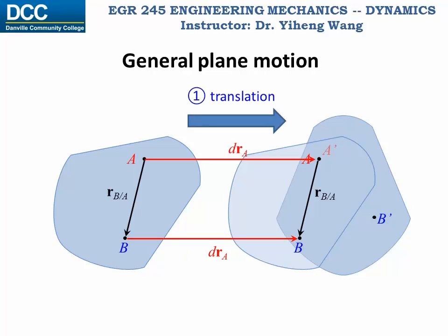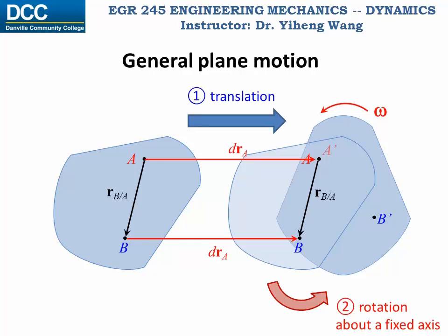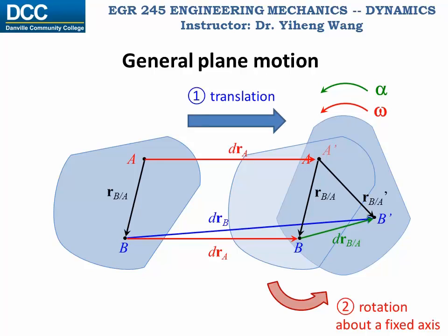For the second step of the motion, the object rotates about a fixed axis that is perpendicular to this plane and passes through point A, with an angular velocity of omega and angular acceleration of alpha. This completes the general plane motion during time period dt. Now particle B has a new relative position with respect to A, and the change in its relative position is represented by vector drB/A. From vector addition, the displacement of particle B: drB equals drA plus drB/A.